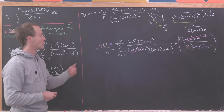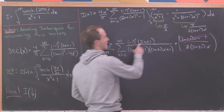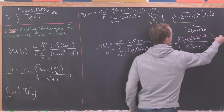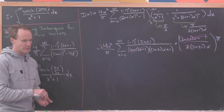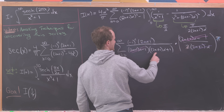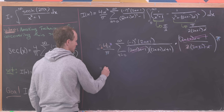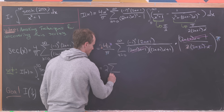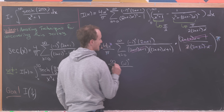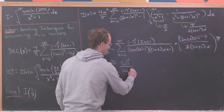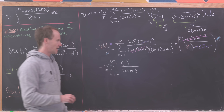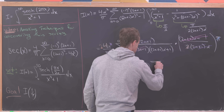After all the cancellations, we're left with 2 times the sum from n=0 to infinity of (-1)^n over (2n+1 + 1/α). We can write the reciprocal 1/(2n+1 + 1/α) as the integral from 0 to 1 of t^(2n + 1/α) dt, since integrating t^(2n+1/α) increases the exponent by 1 and divides by the new exponent, recovering that reciprocal upon evaluation.